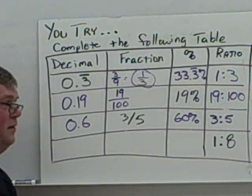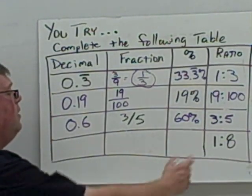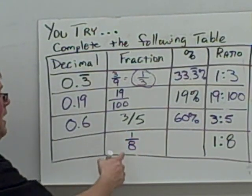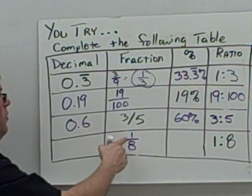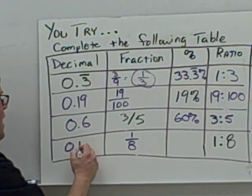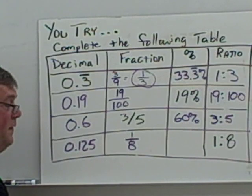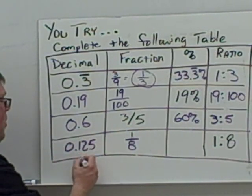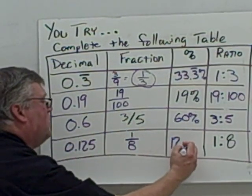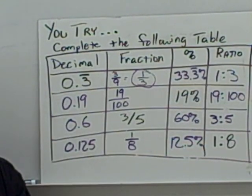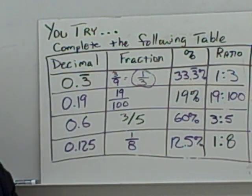Here we have 1 to 8, the ratio. The easiest conversion is to a fraction: 1/8. Then to get the decimal, divide the top by the bottom in the calculator and you get 0.125. To convert the decimal to a percent, multiply by 100 and you get 12.5%. We'll be working on this in class tomorrow. Good luck, see you then.